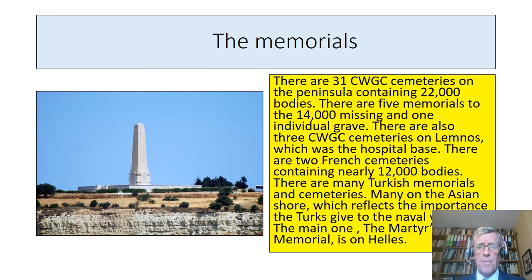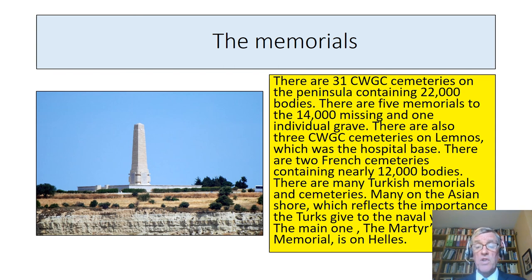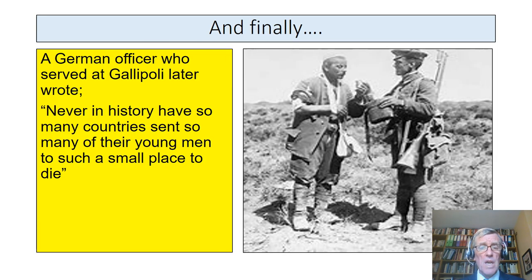There are many memorials on the peninsula. There are 22,000 British and Empire soldiers buried in 31 cemeteries, and five memorials to 14,000 missing who didn't have their own grave. There are also cemeteries on the island of Lemnos, which was a hospital base, and two French cemeteries on the peninsula with 12,000 bodies, and many Turkish memorials and cemeteries as well, mainly on the Asian shore. A German officer who served at Gallipoli said: 'Never in history have so many countries sent so many of their young men to such a small place to die.'